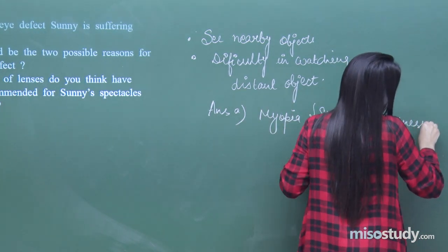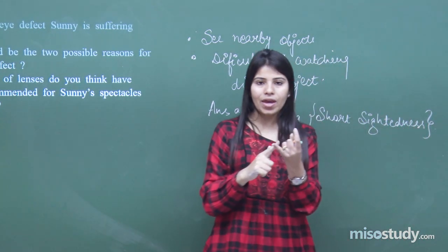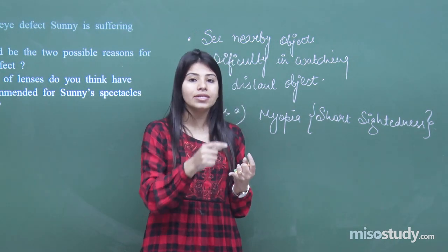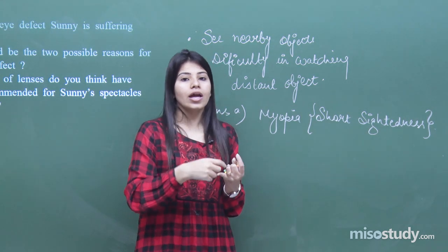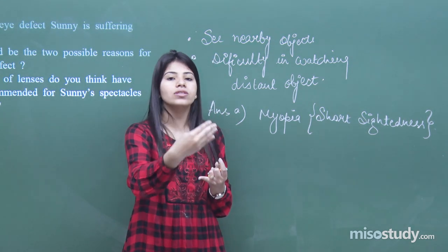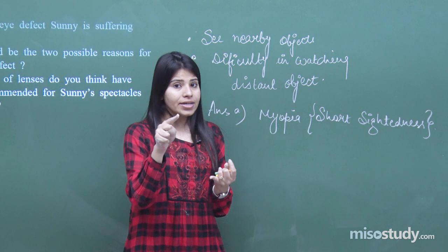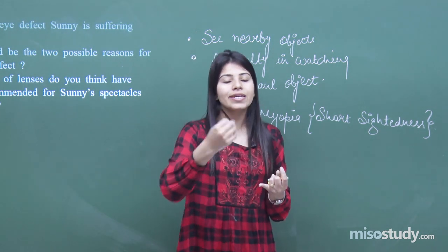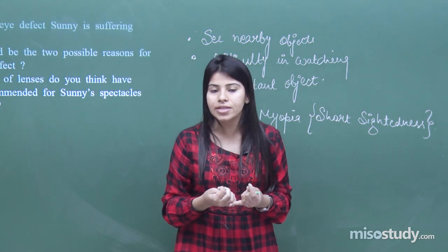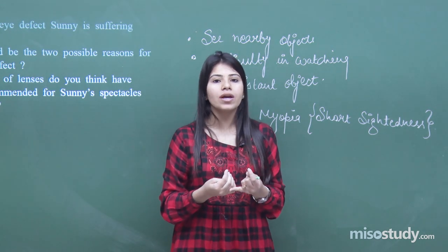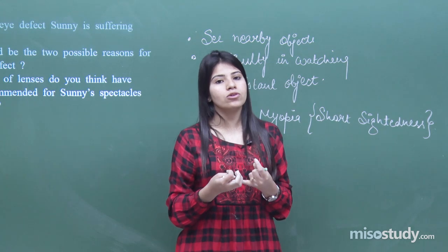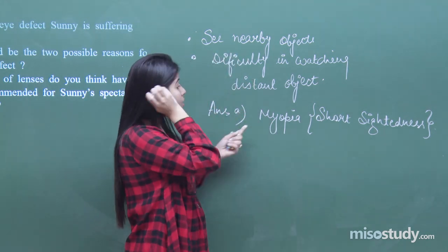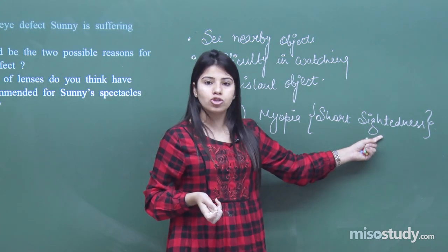There are three defects of the eye: myopia, hypermetropia, and presbyopia. Myopia means you can see nearby objects clearly but have difficulty watching distant objects. Hypermetropia means you can see far objects clearly but have difficulty watching nearby objects. Presbyopia is due to old age — you cannot see nearby or far objects clearly. So Sunny is suffering from myopia, which means short-sightedness.